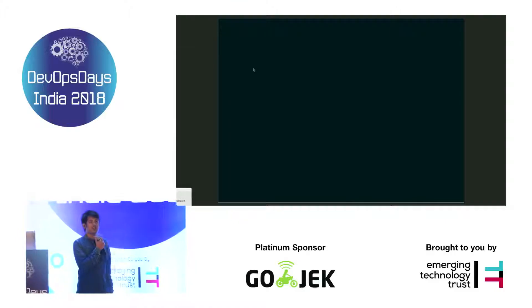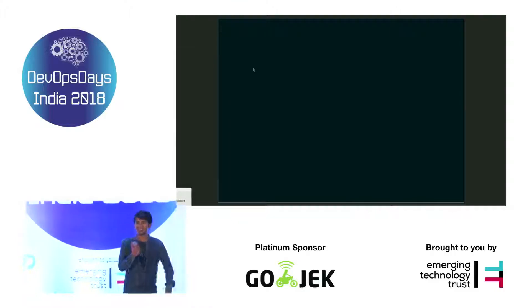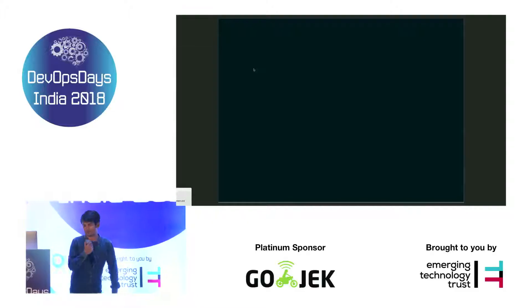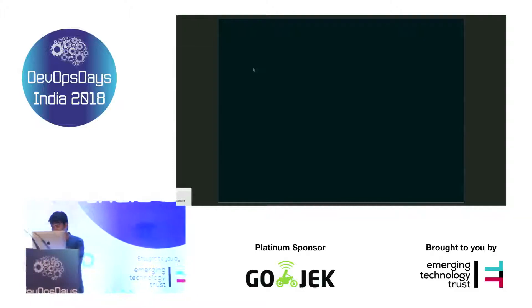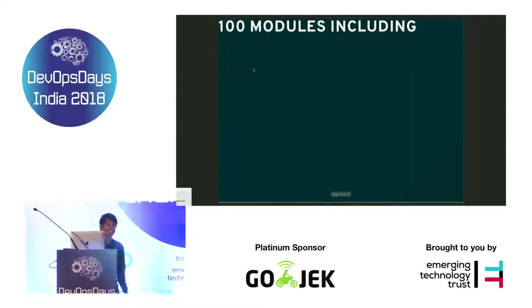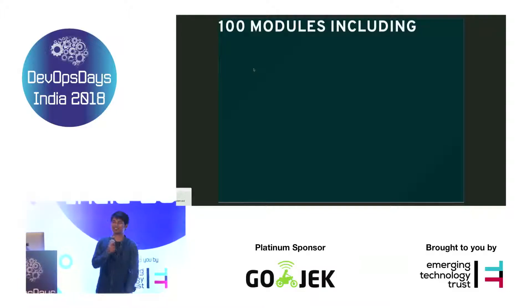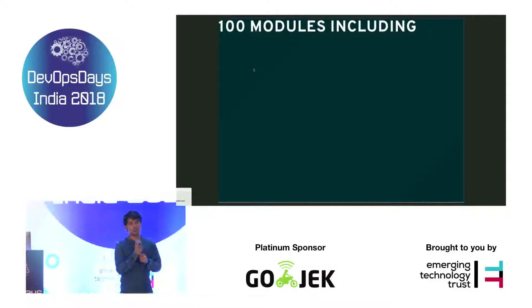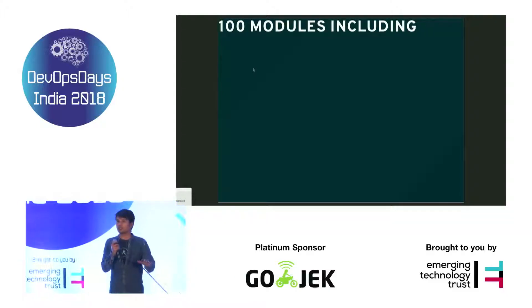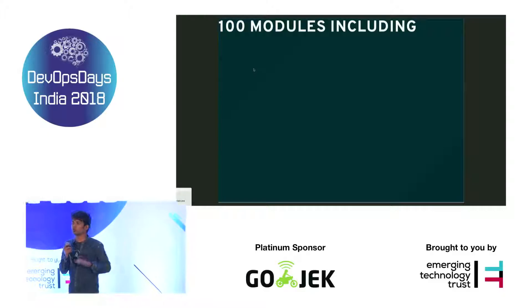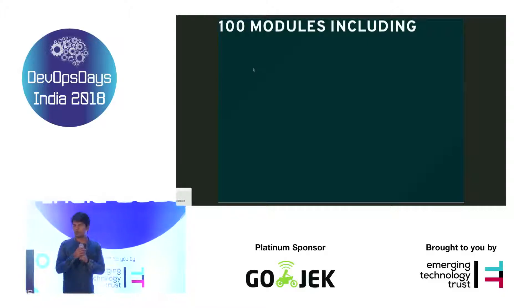The answer is: Automate with Ansible. To automate AWS with Ansible, you have over 100 modules in Ansible. Using those modules, we can support you to automate your AWS infrastructure using Ansible Tower.